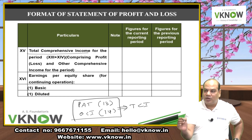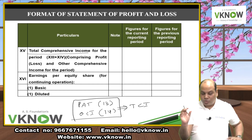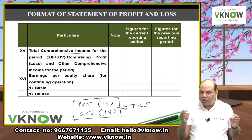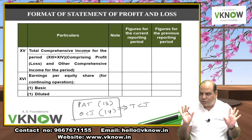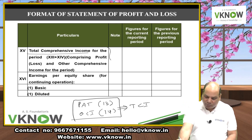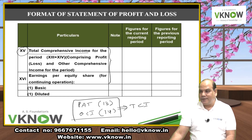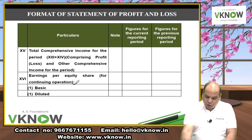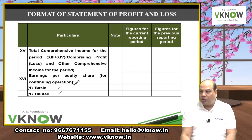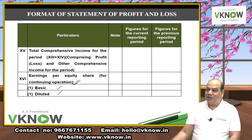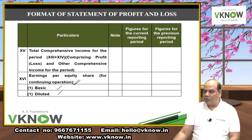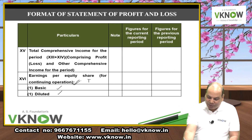Schedule 3 Division 2 also requires EPS to be shown: basic and diluted, separately for Continuing Operations, Discontinuing Operations, and All Operations. Ind AS 33 deals with EPS. Basic EPS is based on actual number of shares; diluted EPS is based on actual plus potential shares. Potential shares (like convertible bonds) don't exist yet but may become shares in future.